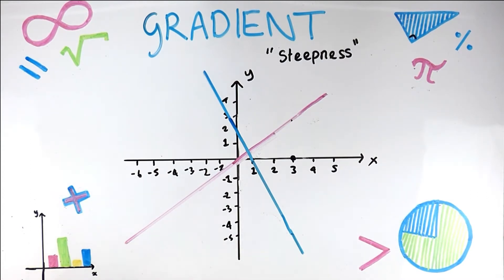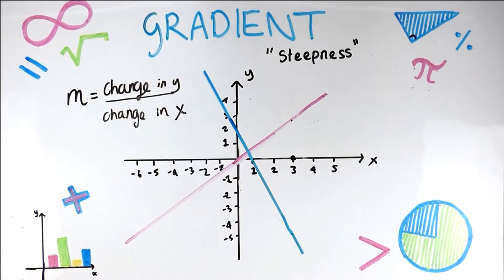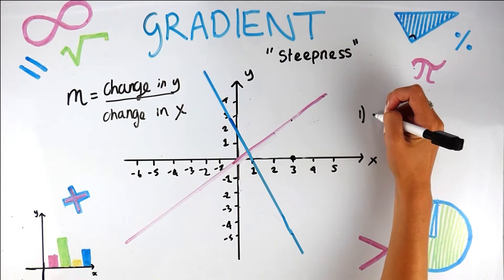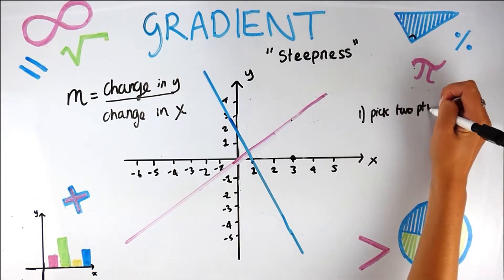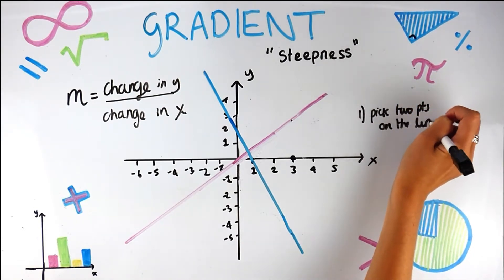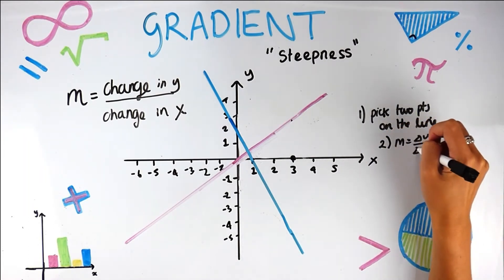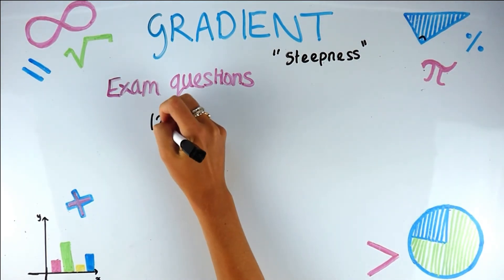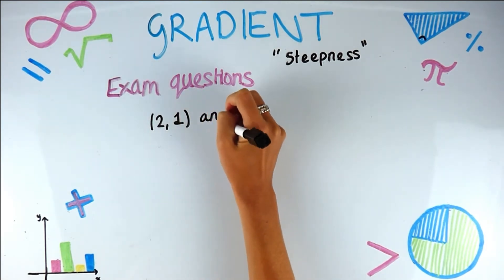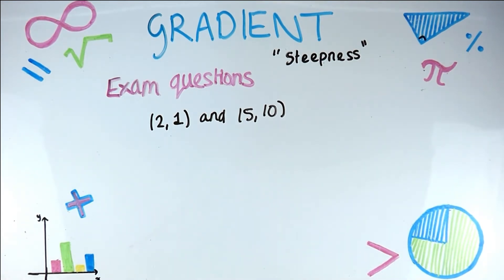To summarize: gradient is the steepness of a line. Step one — pick two points on the line. Step two — put those into your formula: change in y over change in x. Now let's look at some exam questions using those steps. One type gives you two coordinates and asks you to find the gradient of the line that passes through those two points.